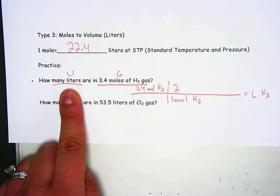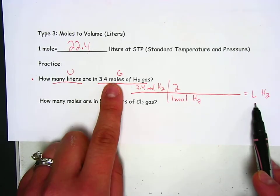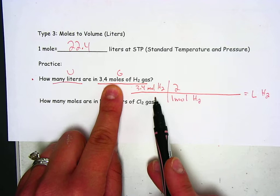For this problem, the unknown was liters, so we put that at the end here. The moles are given: 3.4 moles of hydrogen.